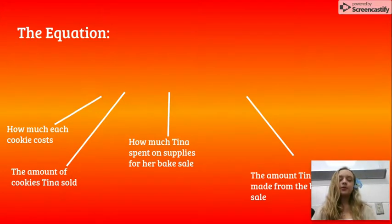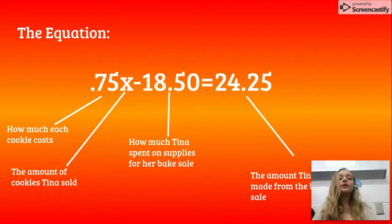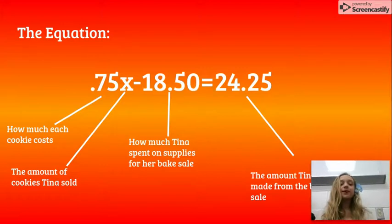The first step is to set up the equation. To find profit, you need to do income minus expenses. We know that the profit is $24.25, so that is one side of the equation. We also know that each cookie is 75 cents, but we don't know how many cookies were sold, so we are going to represent the amount of cookies with an X. She spent her own money on supplies, which was $18.50. This number is going to be put into the equation as a negative because it was spent, not gained. Multiplying 0.75 times X would represent how much she made from selling the cookies.